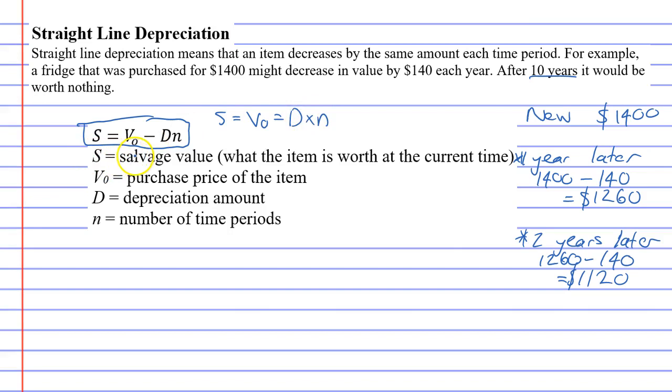Now, S stands for the salvage value, what the item is worth at the current time. For instance, after two years for our fridge, S equals $1,120. It's the value of the fridge after a certain time period.